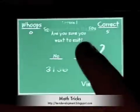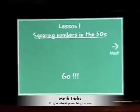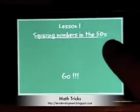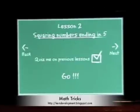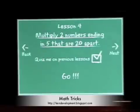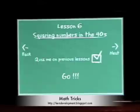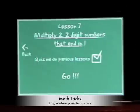It's really that easy to go back to the different lessons. Lesson 1: squaring numbers in the 50's. Lesson 2: squaring numbers ending in 5. Lesson 3: multiplying two numbers that end in 5 that are 10 apart. Lesson 4: multiplying two numbers ending in 5 that are 20 apart. Lesson 5: multiplying two numbers in the 90's. Lesson 6: squaring numbers in the 40's. Lesson 7: multiplying two two-digit numbers ending in 1. Those are the seven lessons.